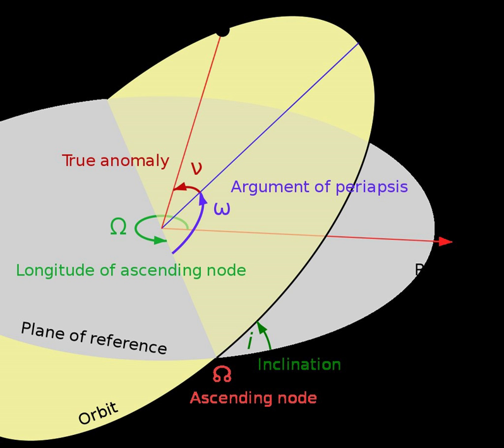For a satellite orbiting a planet, the plane of reference is usually the plane containing the planet's equator. For planets in the solar system, the plane of reference is usually the ecliptic, the plane in which the Earth orbits the Sun. This reference plane is most practical for Earth-based observers.